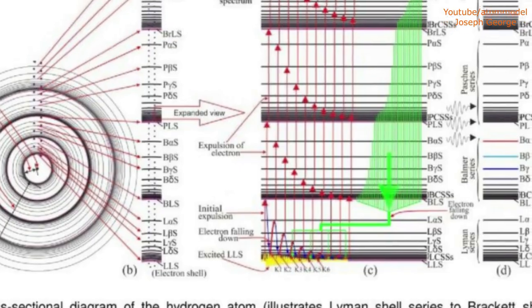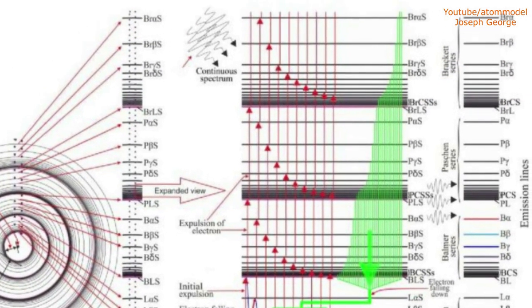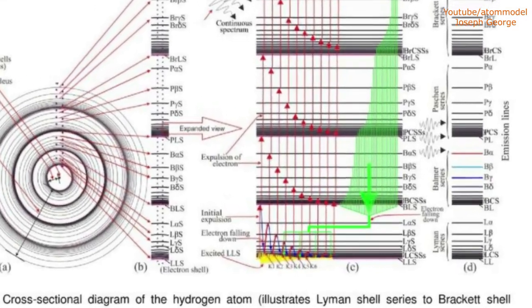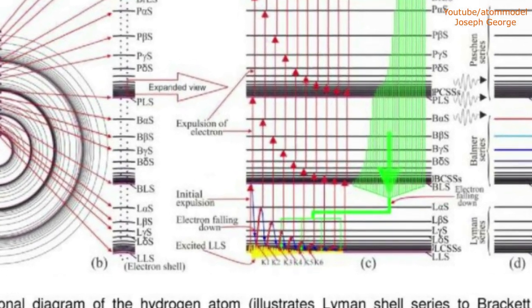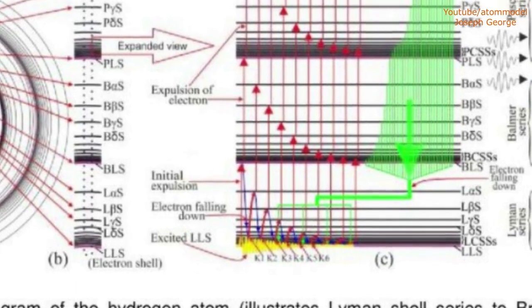Now let us see how an atom of an element creates its absorption spectrum and emission spectrum lines. If a photon incident on an atom's electron and if the photon's frequency matches with the resonant frequency of the shell, electron's shell or transitory shell, in which the electron is currently occupied,